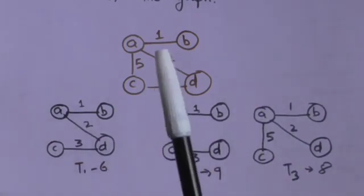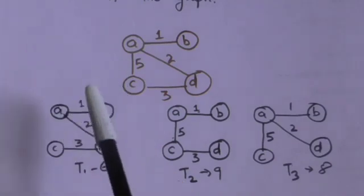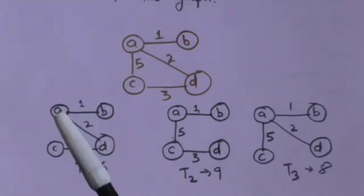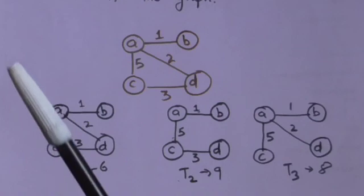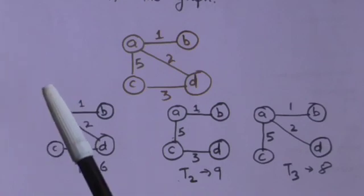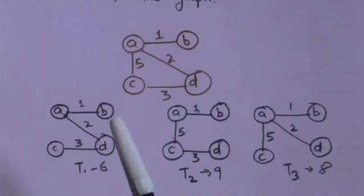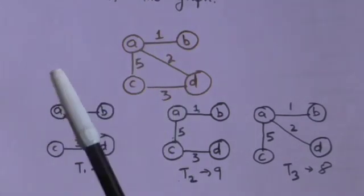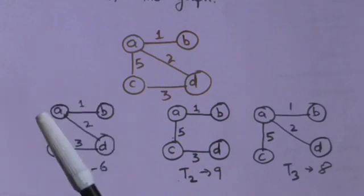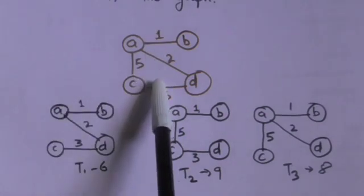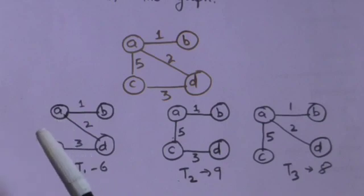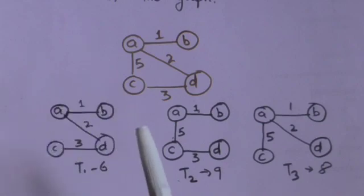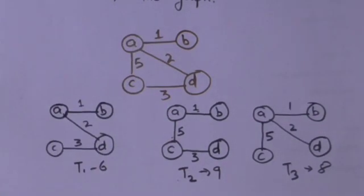A minimum spanning tree of a weighted connected graph is its spanning tree of the smallest weight. So the minimum spanning tree of this graph is T1, because T1 is the spanning tree with minimum weight.